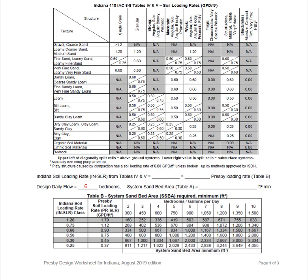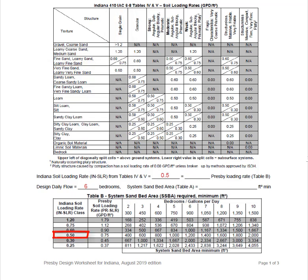In step number two, we're going to calculate the minimum system sand bed area. Let's find the row with very fine sand and then find where it intersects with the single grain column. This value is 0.5 gallons per day per square foot. Now let's find the corresponding Presby loading rate in table B. Once we find 0.5, we move directly to the right and find the Presby loading rate, which in this case is 0.75 gallons per day per square foot. We will start at the 0.75 loading rate and move to the right until we intersect the column for six bedrooms. In this case, we will need at least 1,200 square feet of system sand bed area.